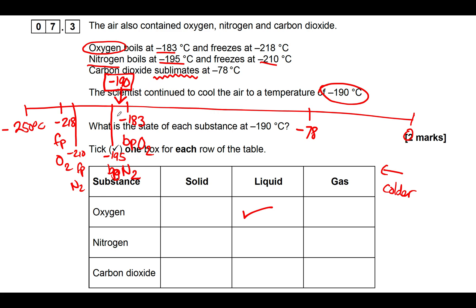For nitrogen at minus 190°C, we haven't got quite cold enough for the nitrogen to condense. We're above the boiling point of nitrogen, which is minus 195°C, and minus 190 is warmer than that — so nitrogen is going to be a gas. Finally, carbon dioxide solidifies at minus 78°C, so all the way down at minus 190°C, carbon dioxide is definitely a solid.